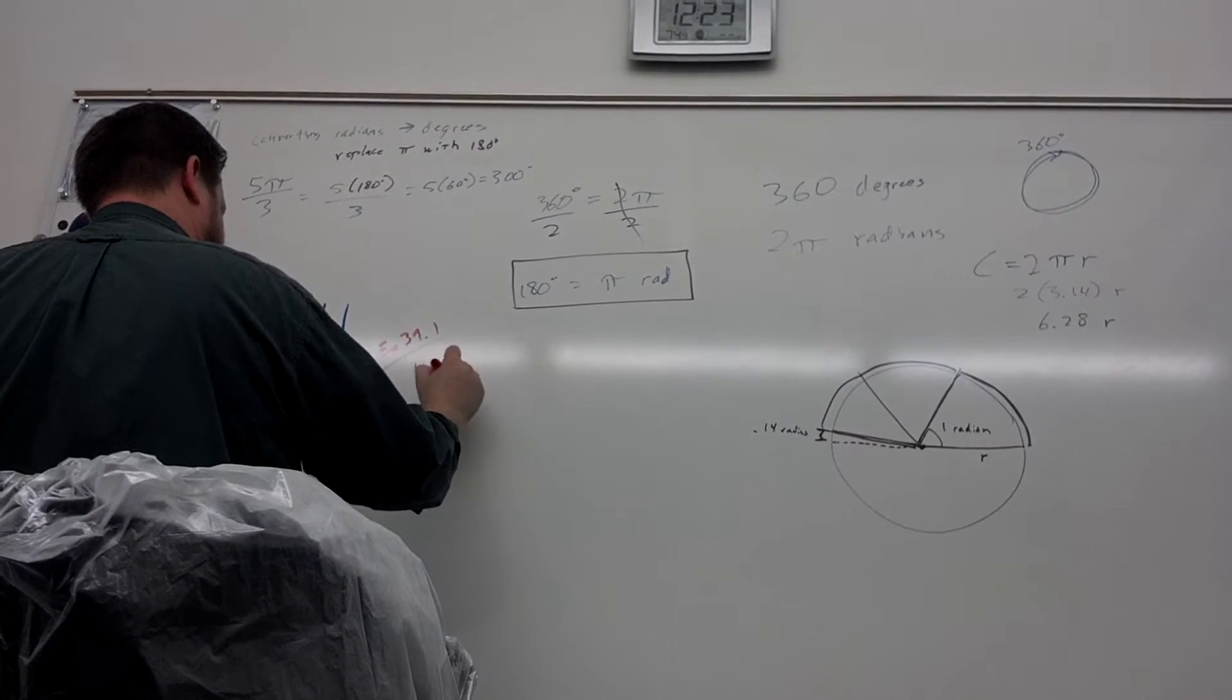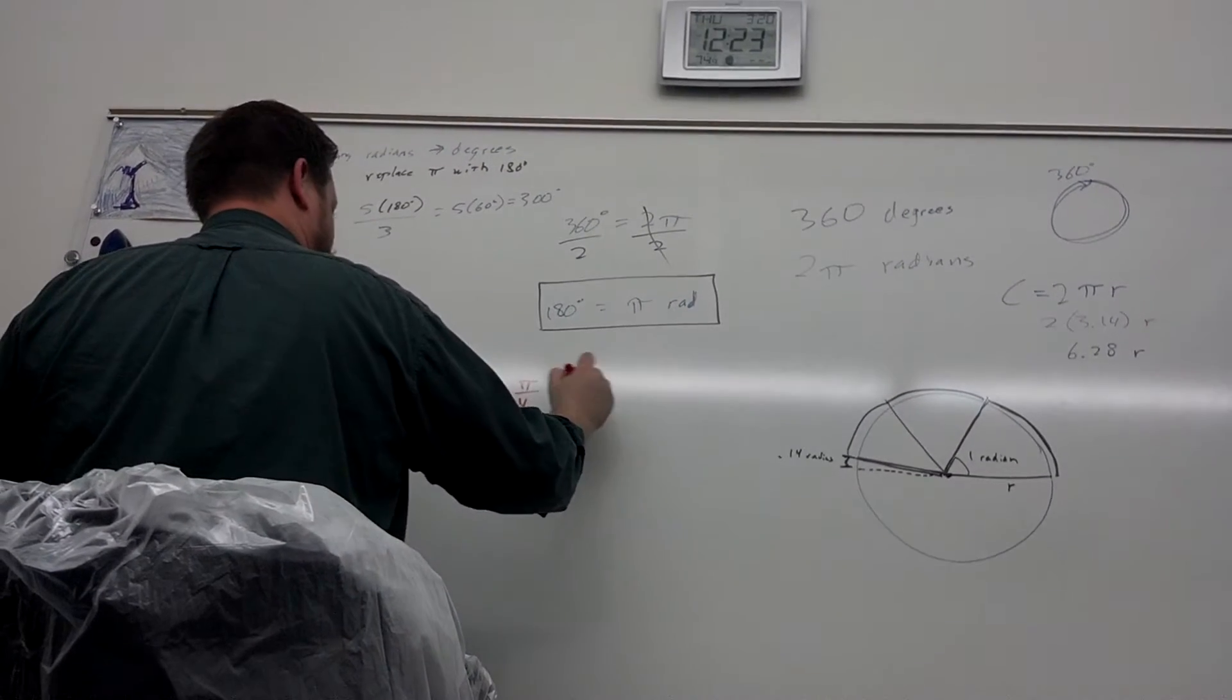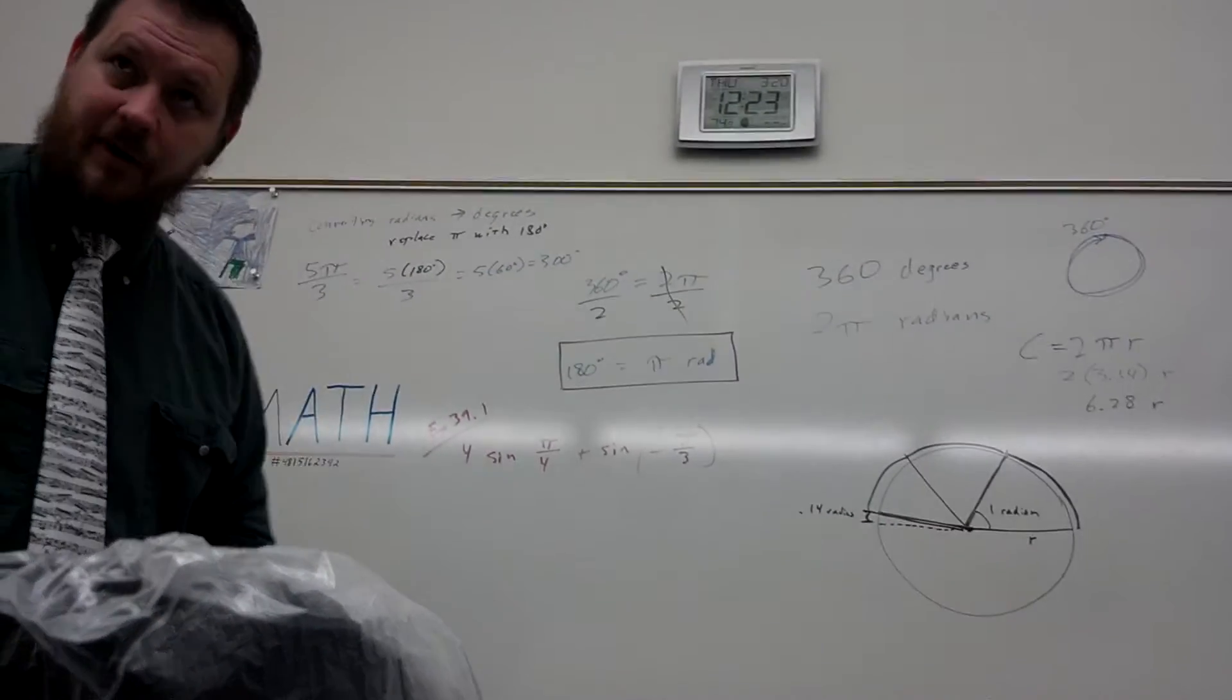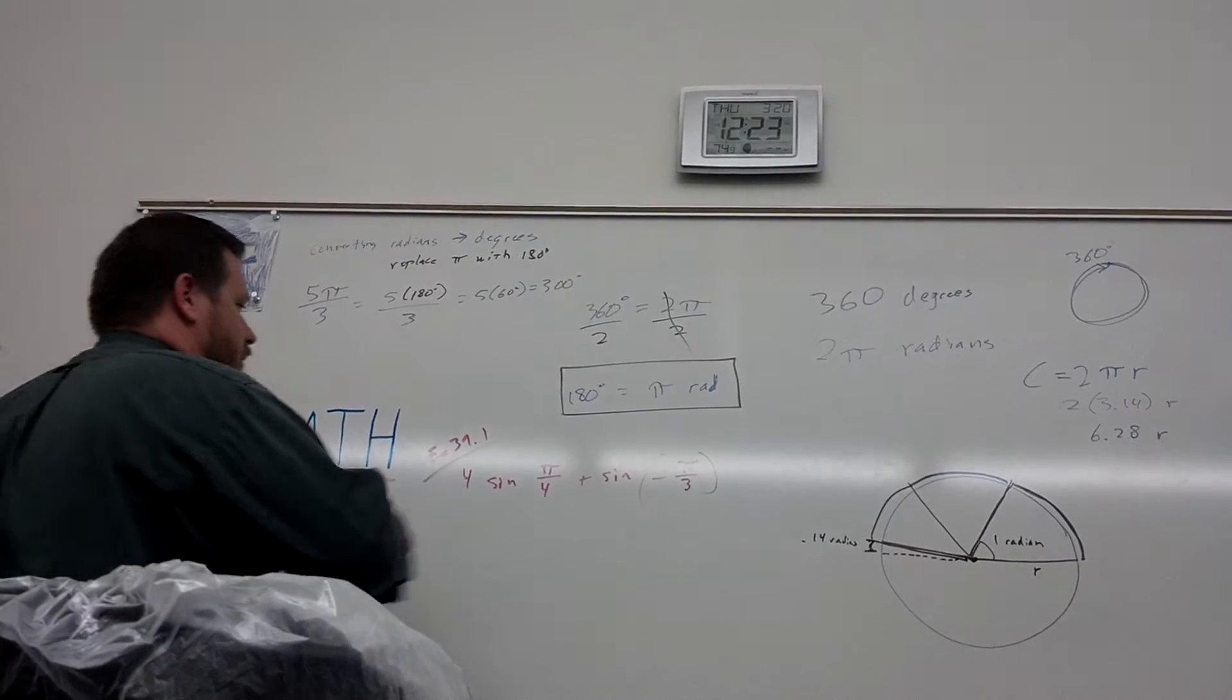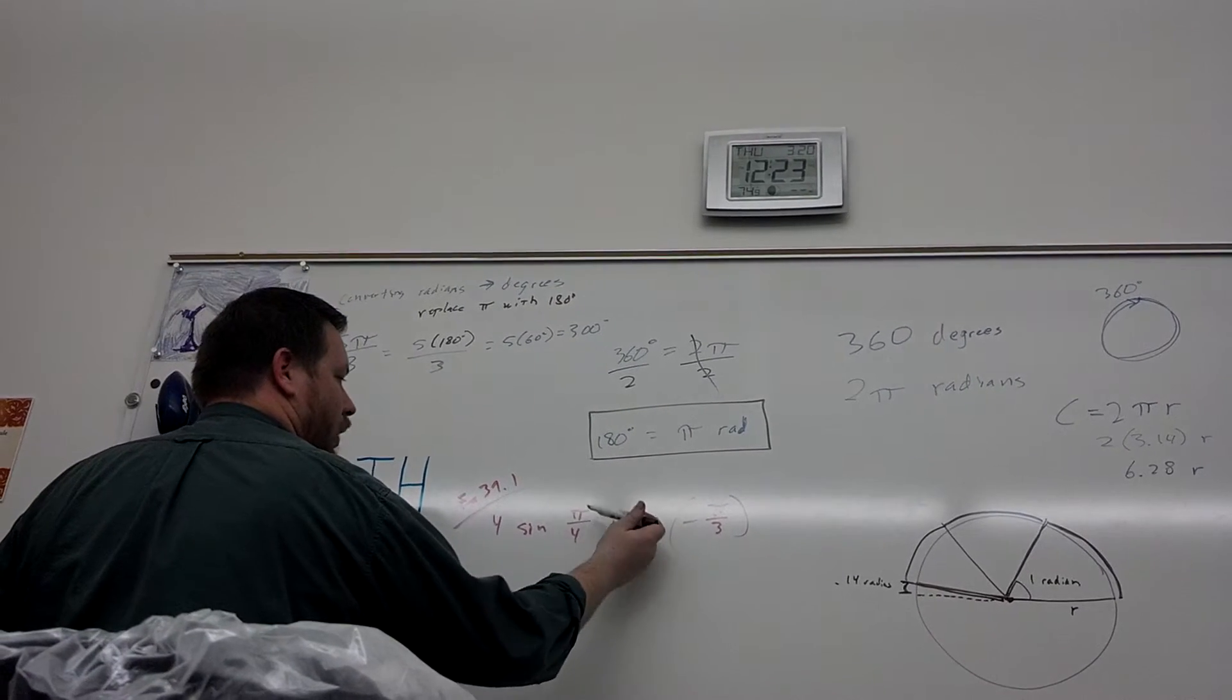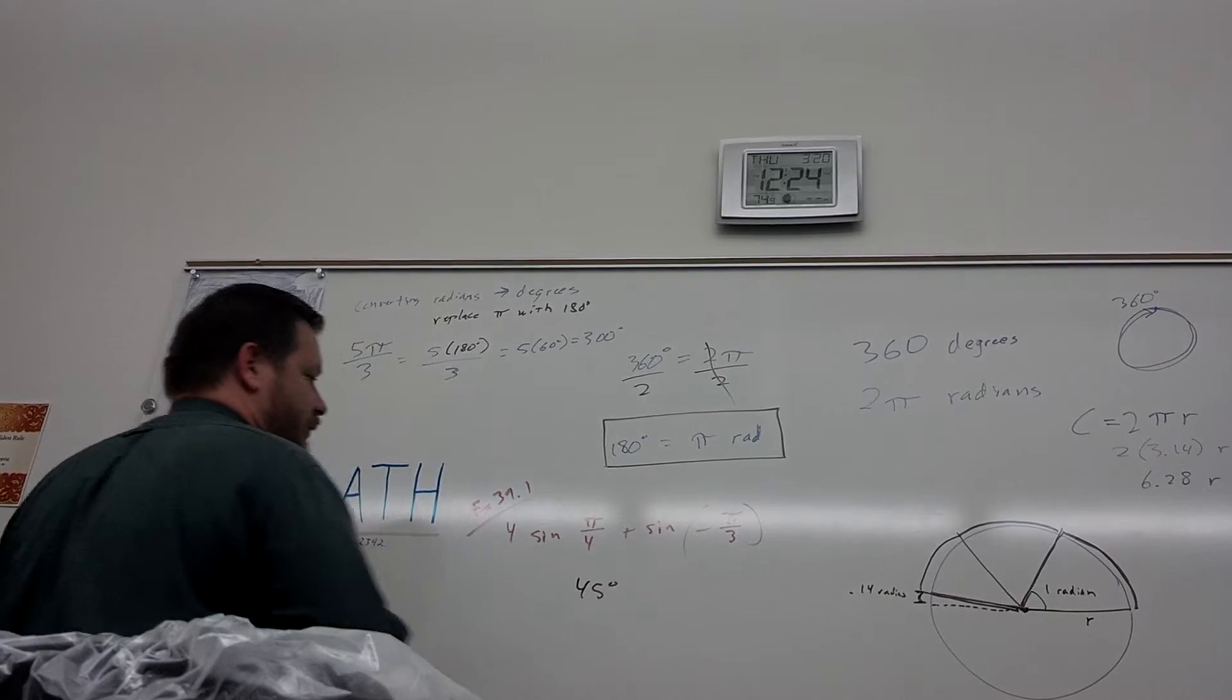If we have 4 times the sine of pi over 4 plus the sine of negative pi over 3, that looks very scary and complicated, doesn't it? But it's not. Okay. No, I think it's the sine of 180. Let's see. Pi over 4 radians is how many degrees? I don't know. What's 180 divided by 4? 44. That's right. 45. 45.